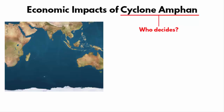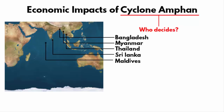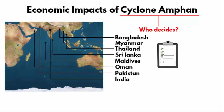Eight countries in the region — Bangladesh, Myanmar, Thailand, Sri Lanka, Maldives, Oman, Pakistan, and India — submitted a list of names. These countries decide the names of cyclones that occur in the Indian Ocean region. A name is chosen from the list in a sequential manner. Amphan happens to be the last name on the current list before a new one begins.